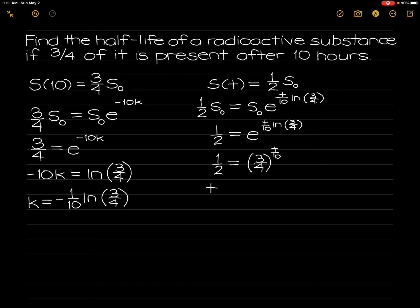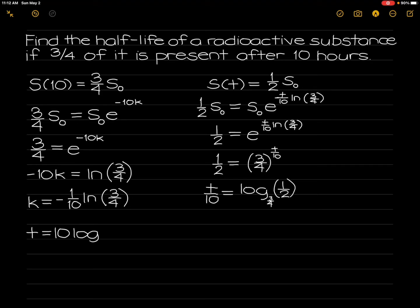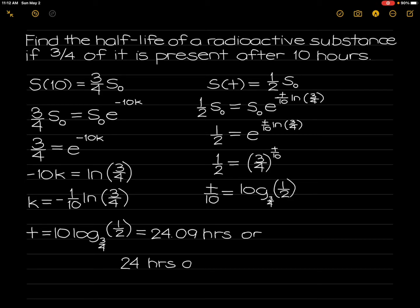So, t over 10 is equal to the logarithm of 1 over 2 with base 3 over 4. Therefore, t is equal to 10 times the ln of 1 over 2 with base 3 over 4, which equals 24.09 hours, or 24 hours and 54 minutes.